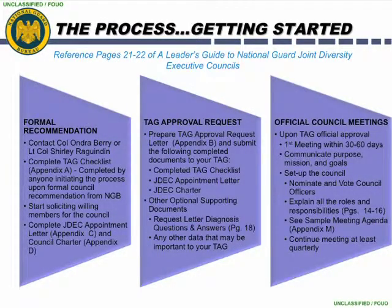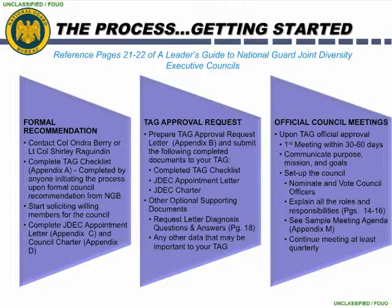Now it is time to go through the process of getting started. To make a formal recommendation to start a council, contact the Special Assistant to the CNGB on Diversity, Colonel Andre Berry, or Ms. Phyllis Brantley, Chief, Diversity and Special Emphasis Programs. One of these individuals will make a formal council recommendation to your TAG on your behalf. Upon formal council recommendation from NGB, complete the TAG checklist found in Appendix A. Next, solicit willing members for the council — members interested in diversity who may have expertise in diversity issues. Finally, complete the JDEC appointment letter found in Appendix C and the council charter found in Appendix D.